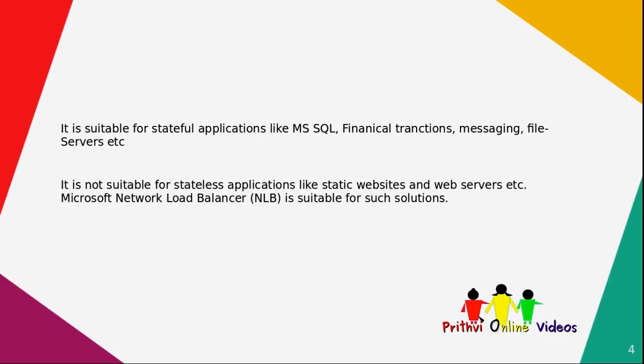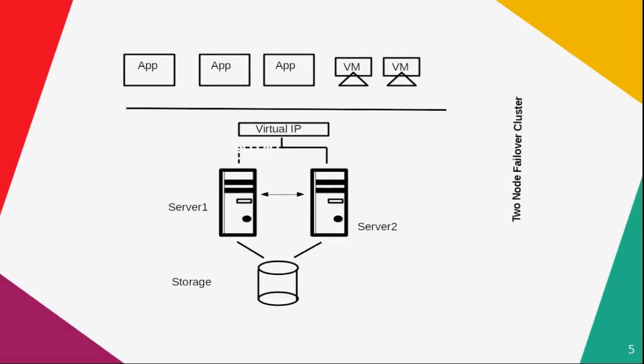Here is a typical diagram showing a two-node Microsoft failover cluster. On top, we can see applications and virtual machines running. The virtual machines and applications connect through a virtual IP, which is the cluster name that hits the physical server that is active at that time. In this diagram, server 2 is the active node. It accesses and writes data on the shared storage. In case anything goes wrong with server 2, the heartbeat between them stops and server 1 takes over, causing a failover so the applications keep running and remain accessible through server 1.